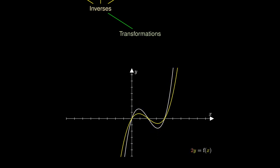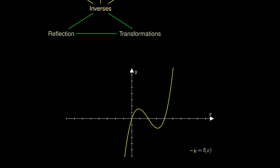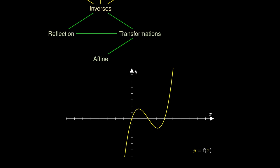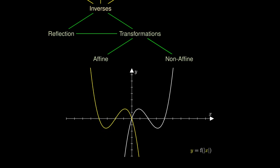Replacing x with negative x gives a reflection about the y-axis, and replacing y with negative y gives a reflection about the x-axis. These are known as affine transformations, where the shapes of the graphs remain more or less the same. However, there are useful non-affine transformations: y equals the modulus of f of x requires flipping the graph and keeping everything positive, while y equals f of modulus of x reflects about the y-axis and keeps both the non-negative input copy and the reflected copy.